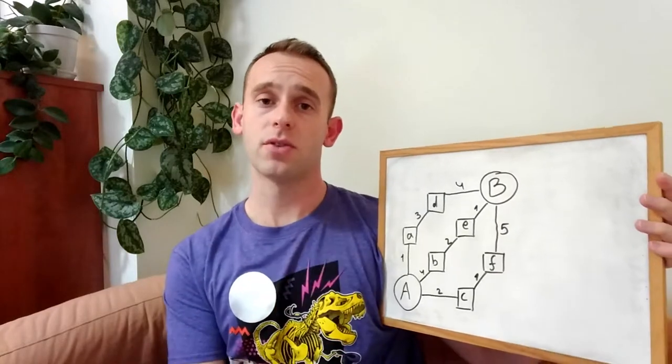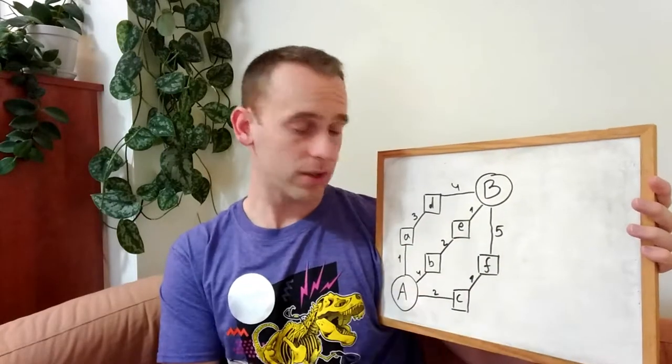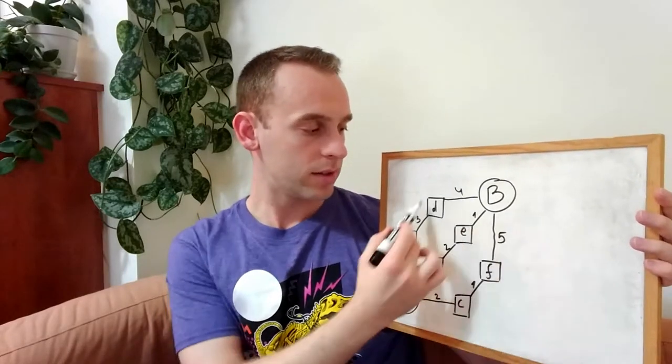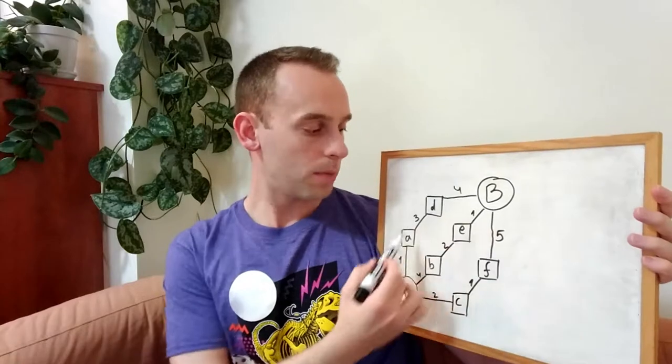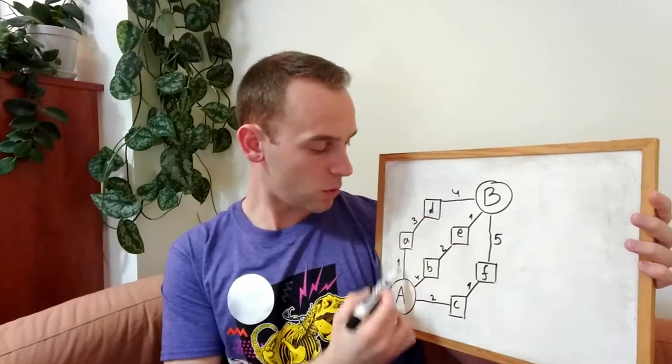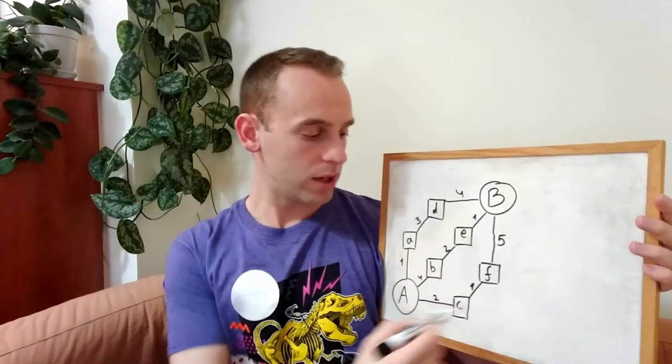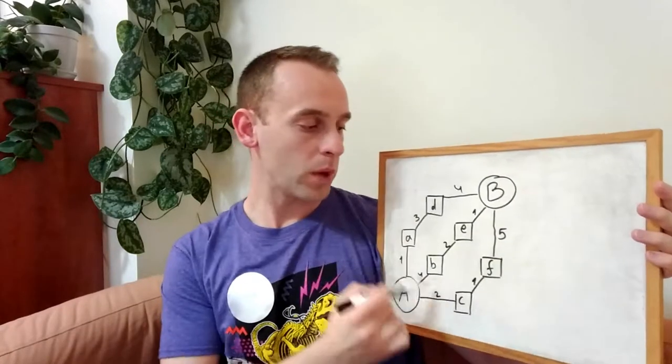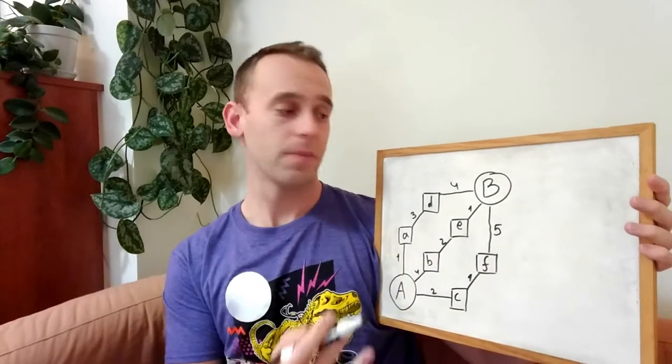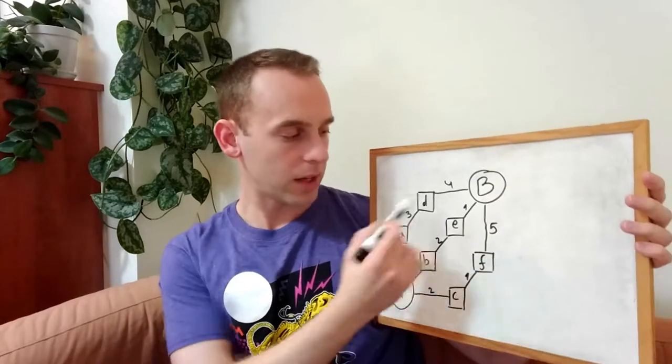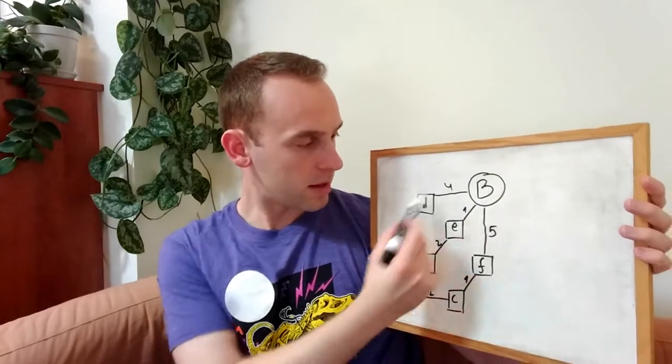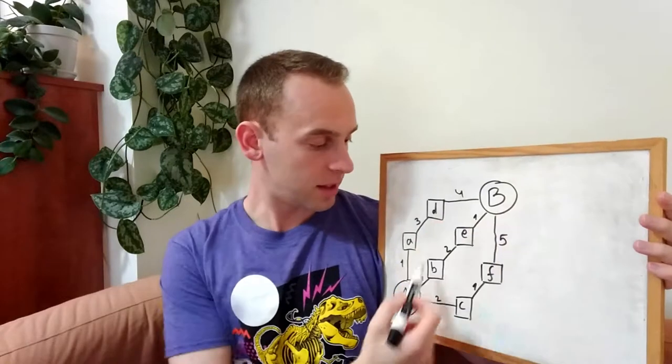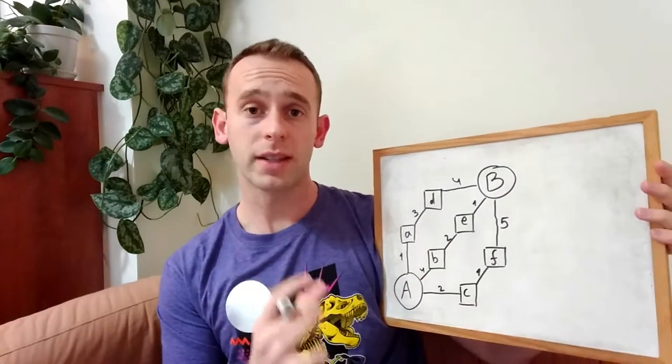So if you've used the BFS algorithm, which ignores the weights of the edges, we can see that every route here is actually of three hops - one, two, three, and also here and here. So the BFS algorithm could have found us each and every one of these paths as the shortest path. But if we look closely at the weights of these edges, we can see that this path is one plus three is four, is eight.